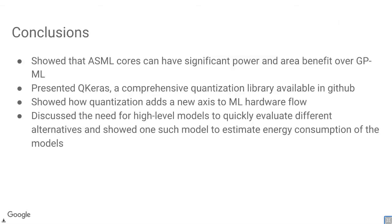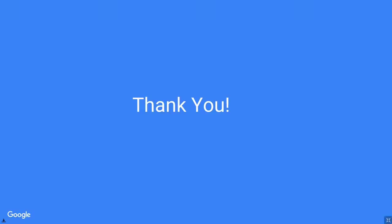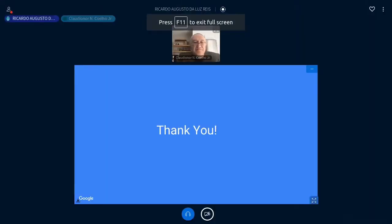In conclusion: I showed how application-specific ML cores can achieve significant power and area benefits over general-purpose ML. I presented QKeras, available on GitHub, as a quantization library. I showed how quantization adds a new axis to the ML hardware design space, giving you different points on the Pareto curve. And I discussed the need for high-level models to quickly evaluate different alternatives, demonstrating how such a model can estimate energy consumption. Thank you.